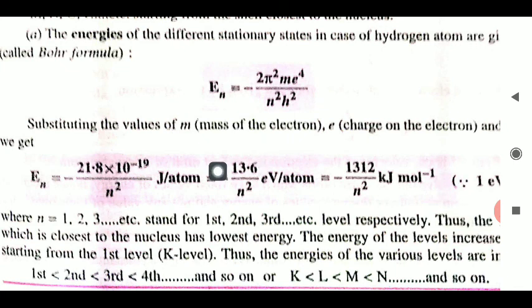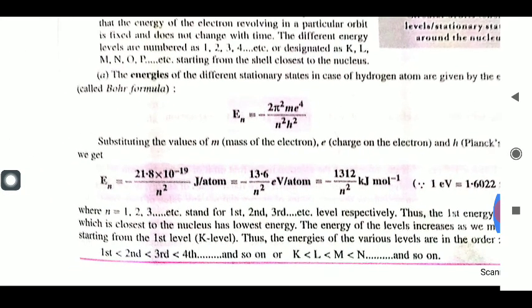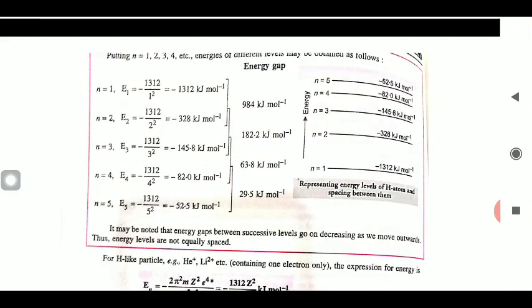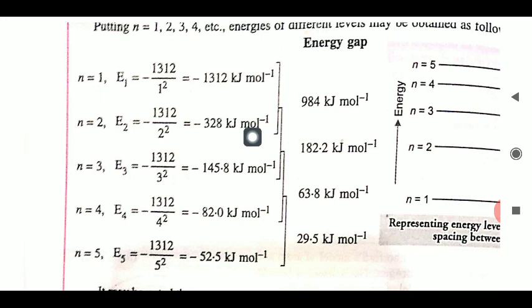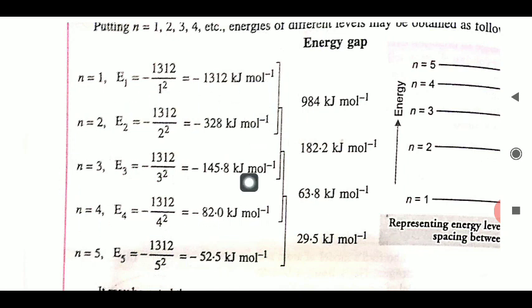For the L shell, put N=2; for M shell, N=3, and accordingly you can calculate the energy of each and every shell. The energy levels show that E1 for N=1 is highest in magnitude, for N=2 it is less, and so on — the energy gap between K and L shells is significant. In this way, Niels Bohr successfully told us how to calculate the energy gap of each shell.